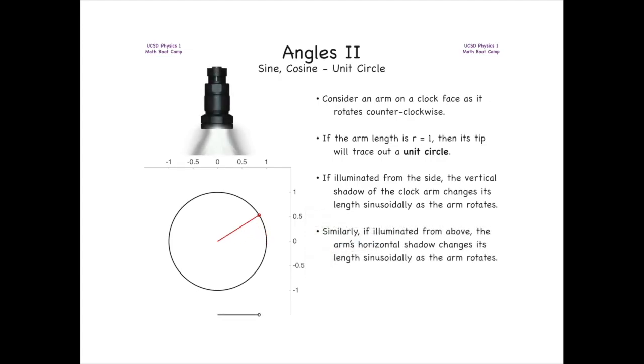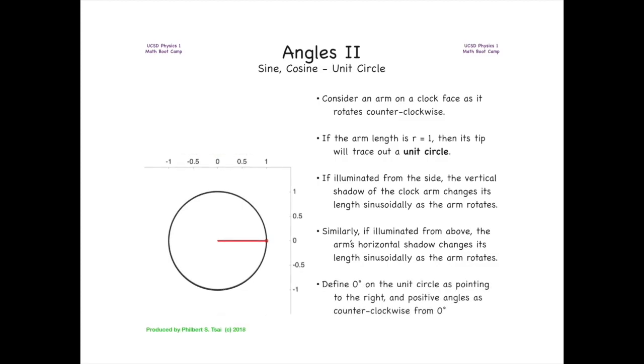Similarly, if we illuminate from above, the arm's horizontal shadow changes its length sinusoidally as the arm rotates as well. Let's define zero degrees on the unit circle as pointing straight to the right, as we previously mentioned, and positive angles as running counterclockwise starting from zero degrees.